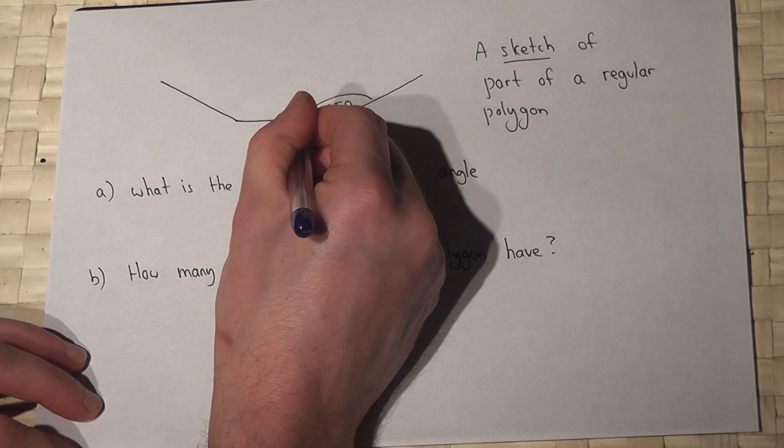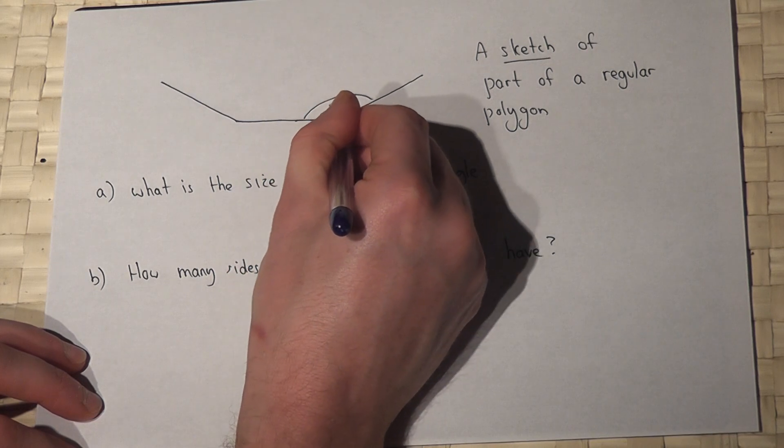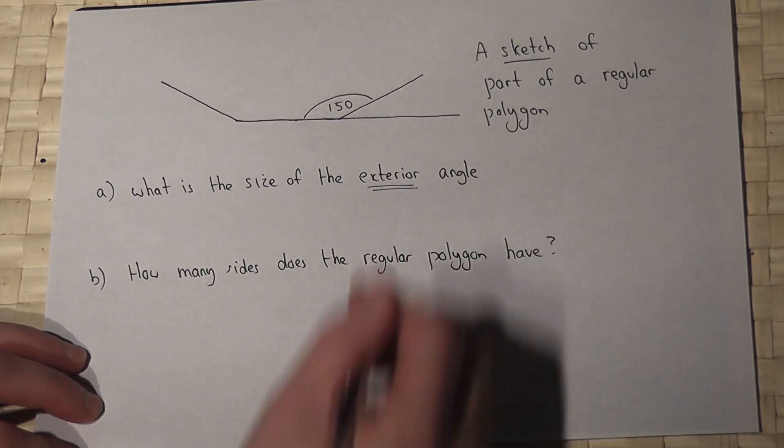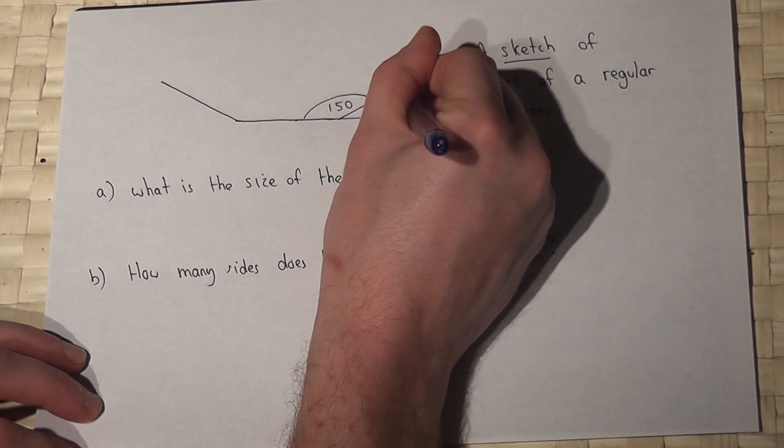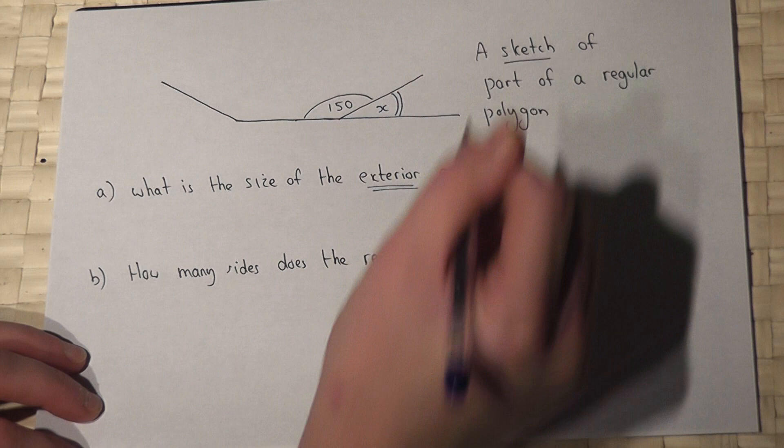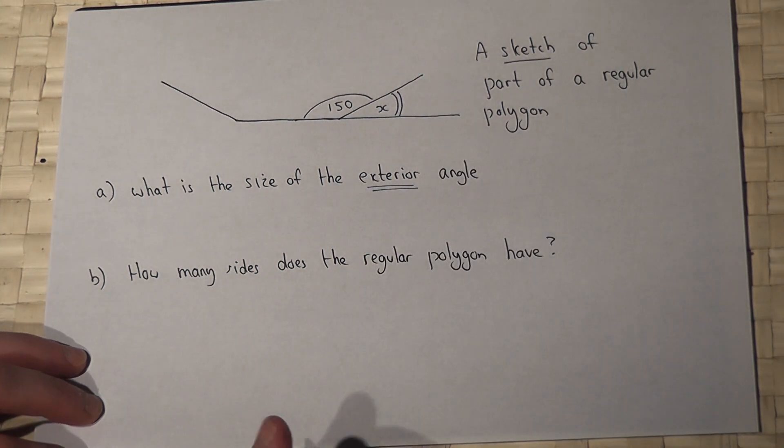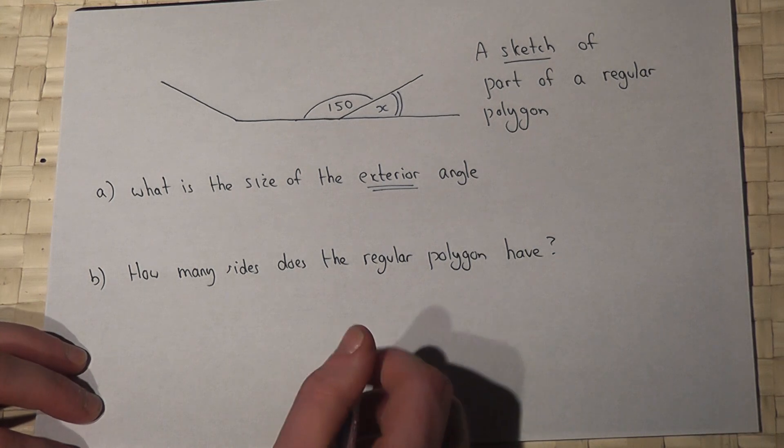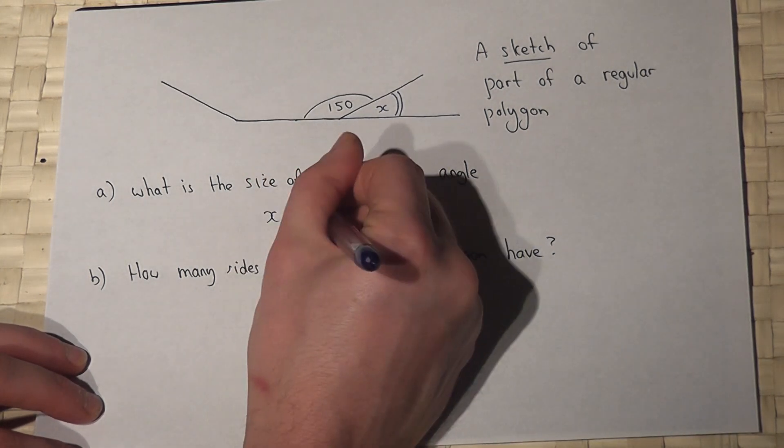If I extend the line or the edge of the polygon like so, then this angle here is called the exterior angle. Because this is a straight line, the exterior angle must equal 180 for the straight line take away the interior angle 150.